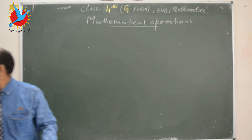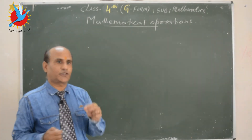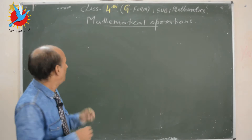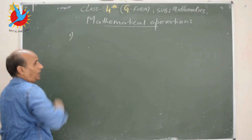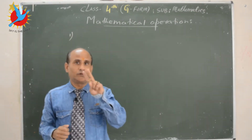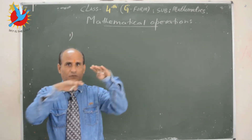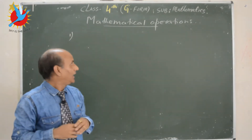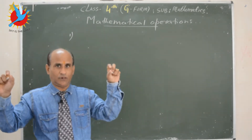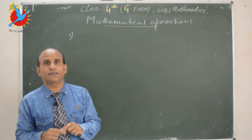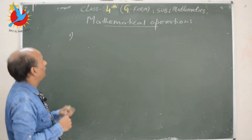We will start with subtraction and how questions on subtraction will be asked. There are three different forms in which a question on subtraction is asked. First is when two numbers are given in row form, second is when two numbers are given in the same row, and the third is when the numbers are given in a statement form.